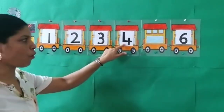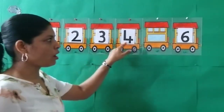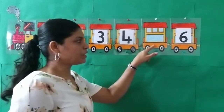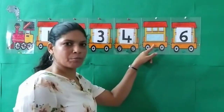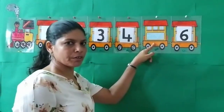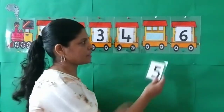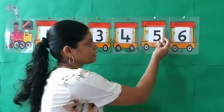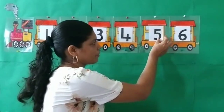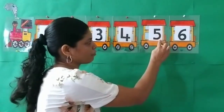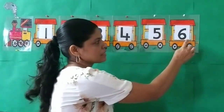3, 4 — which is the number that comes after 4, children? Yes, you are right, it's 5. 5, 6.